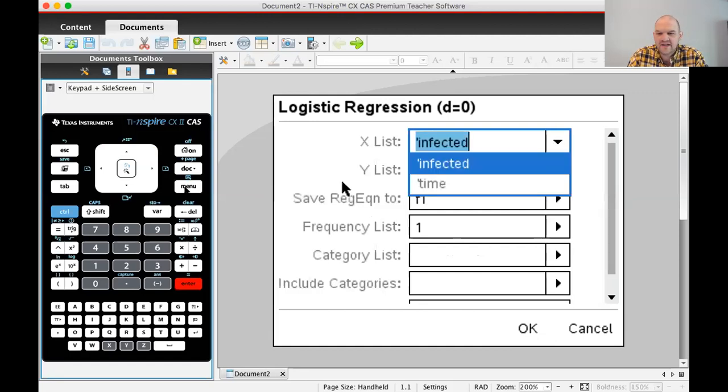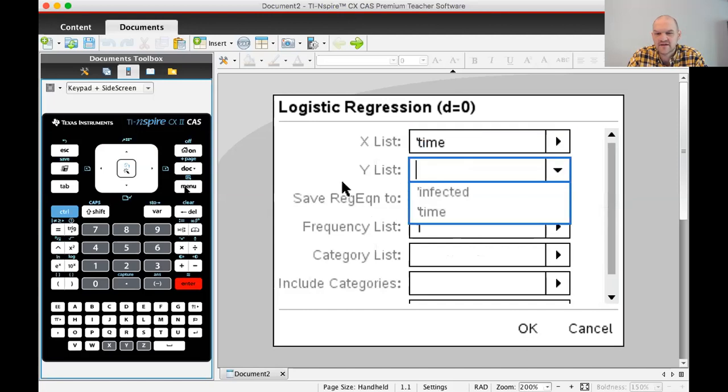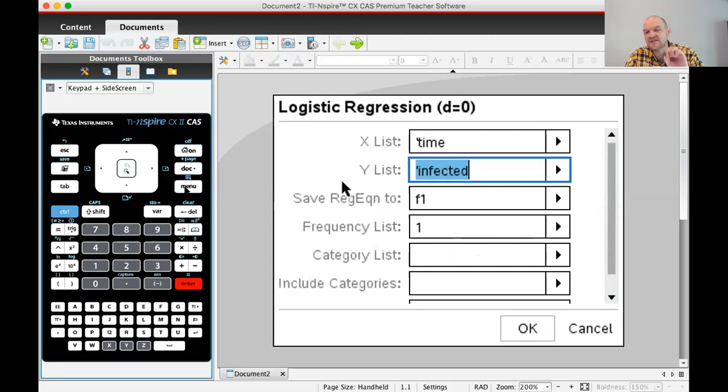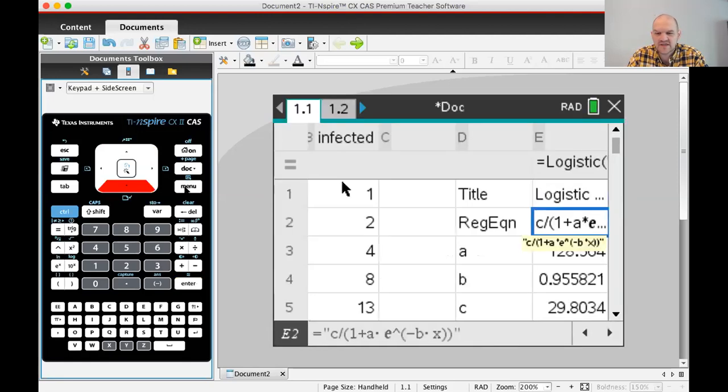I need to pick the X list is going to be time. I just press to the right to get all the available lists. So I want time, and then I'm going to hit tab, press to the right again, and choose infected, and just press enter. The key thing is it's going to put our equation in F1, and that's what we want. So I'm going to press OK.